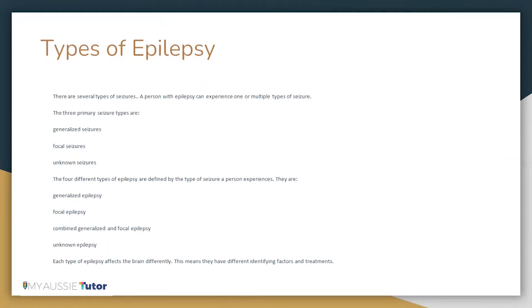The four different types of epilepsy that are defined by the type of seizure a person experiences are generalized epilepsy, focal epilepsy, combined generalized and focal epilepsy, and unknown epilepsy. Each type of epilepsy affects the brain differently, meaning they have different identifying factors and treatments as well.